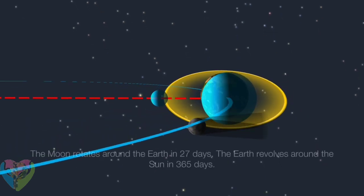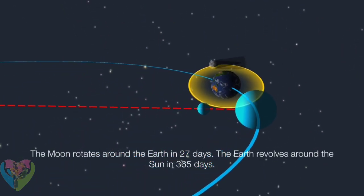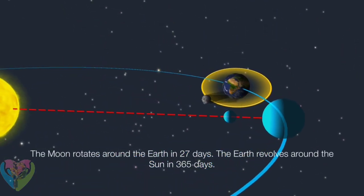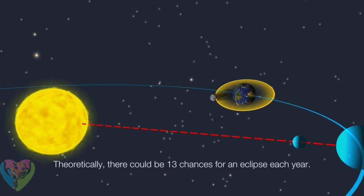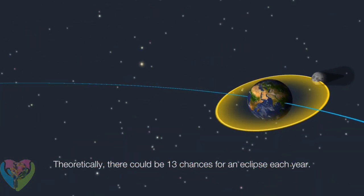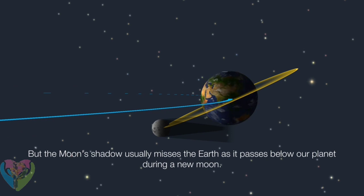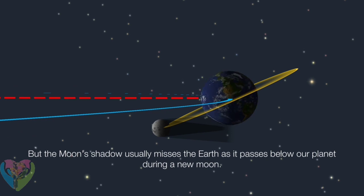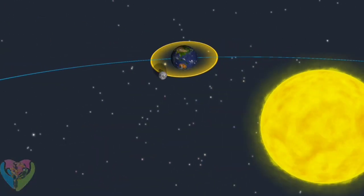The moon rotates around the earth in 27 days. The earth revolves around the sun in 365 days. Theoretically, there could be 13 chances for an eclipse each year. But the moon's shadow usually misses the earth as it passes below our planet during a new moon.